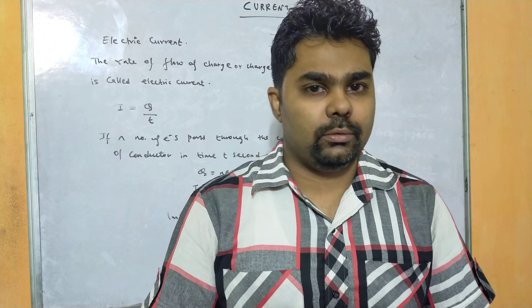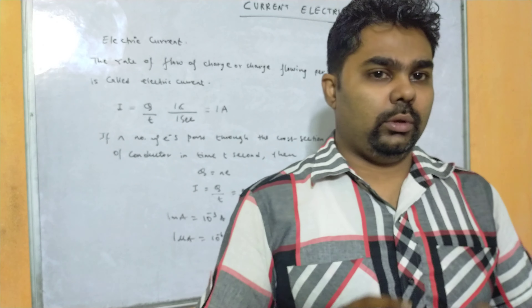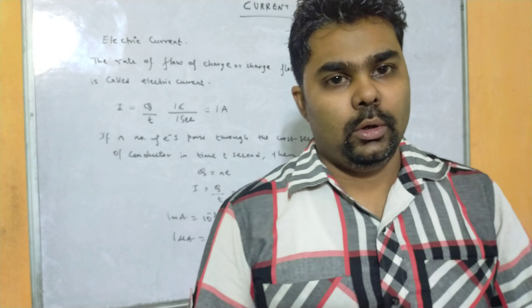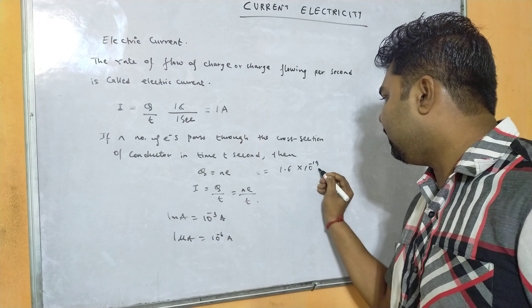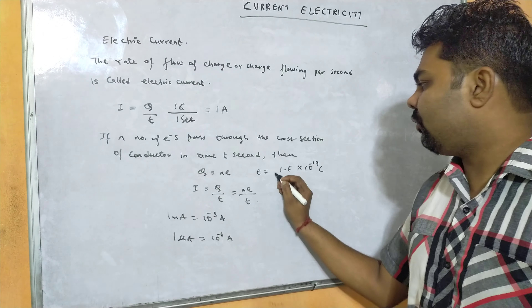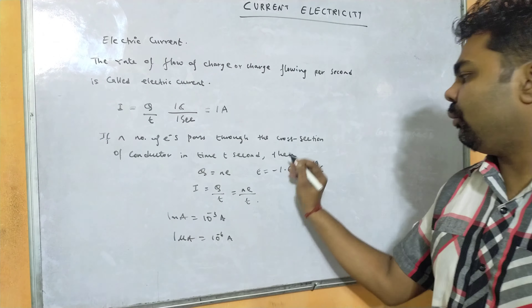So one ampere equals one coulomb per second. Now, a cross-sectional area of a conductor may have n number of electrons. The total charge contained in that conductor is given by Q = ne, where n is the number of electrons and e is the charge of a single electron: e = 1.6 × 10⁻¹⁹ coulombs. The charge of an electron is −1.6 × 10⁻¹⁹ C, but for numericals you can consider the positive quantity. The total current is I = Q/t = ne/t.